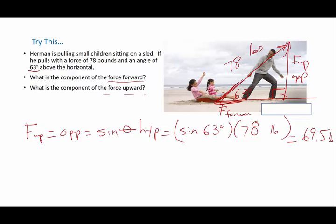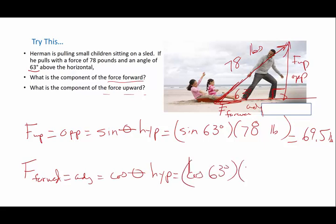Remember, we always put units on numbers. The force forward is the adjacent side. This is the adjacent side. So I am going to use the cosine. So cosine of theta times the hypotenuse is going to be the cosine of 63 degrees times my 78 pounds. And when I do that, let's try it, 63 cosine times 78, I got 35.4 pounds.